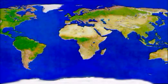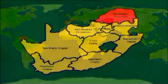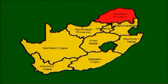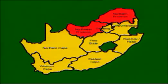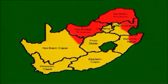Bovine besnoitiosis is widespread in Africa and has a patchy distribution elsewhere. It has been recorded in France, Portugal, Israel, Kazakhstan, South Korea and Venezuela. In South Africa it is endemic in the bushveld areas of northern and northwest provinces, Mpumalanga and KwaZulu-Natal. A few cases have been recorded in northern Cape Province and western Free State.